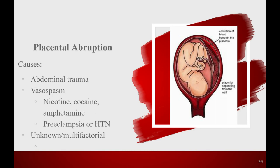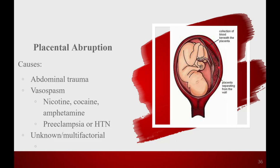Placental abruption is when the placenta starts to shear off the uterine wall. Blood starts pooling — maybe a corner lifts up — usually due to vasospasm or abdominal trauma. Blood pools like a hematoma beneath the placenta, which makes it worse, shearing off more of the placenta. As the placenta separates, mom starts to hemorrhage, and the organ that gave baby every bit of oxygen and nutrients is no longer attached — baby has no perfusion at all.